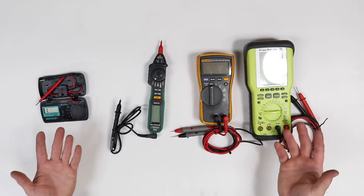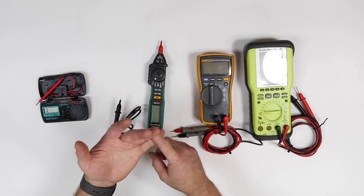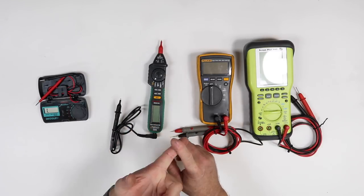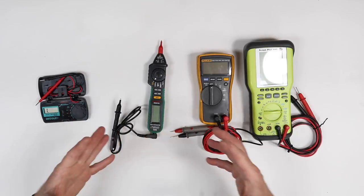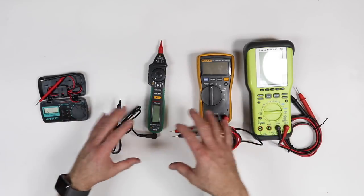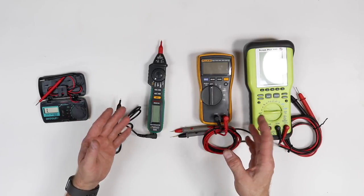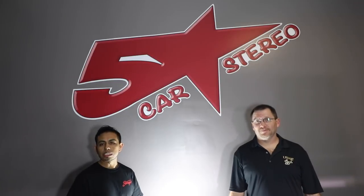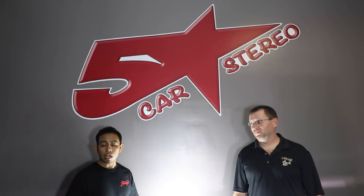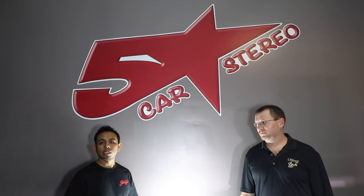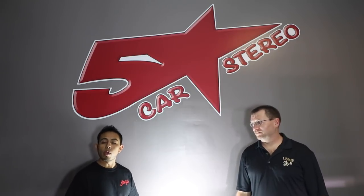You're definitely going to want to get one of these because this will allow you to tell ohm load on a speaker, see if there's a short in your wiring, figure out what kind of battery voltage you have, test to see if there's a break in the wiring, basically anything that goes wrong in the car audio world, you can use one of these tools to figure out. So if you're an installer, you definitely want to get a multimeter. All installers need to take dashes out, radios, door panels. You don't want to scratch it. You don't want to break it.